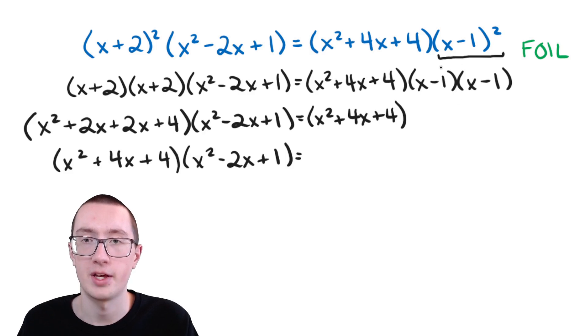So we have first for f, x times x is x squared. Then we have outer, so that's the outer ones, x and minus 1. Don't forget the minus signs, right? So minus 1 times x, well anything times 1 is itself, so we have just x, and then the minus sign stays. So minus x, then inner, that's going to be the same thing, minus 1 times x, so that's just minus x. And then last, minus 1 times minus 1. 1 times 1 is 1, and then two negatives make a positive. This part is going to stay the same, just like before.